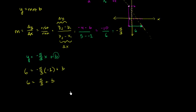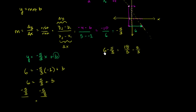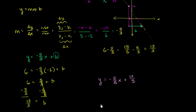We literally substitute this x and y value back in and solve for b. Negative 1 times negative 5 thirds gives us 6 equals positive 5 thirds plus b. Now subtract 5 thirds from both sides. What's 6 minus 5 thirds? That's 18 over 3 minus 5 over 3, which is 13 over 3. So b equals 13 thirds. We know the slope and we know the y-intercept. The equation of our line is y equals negative 5 thirds x plus 13 over 3.